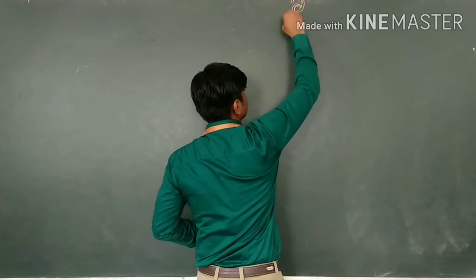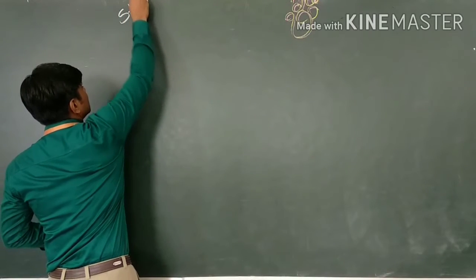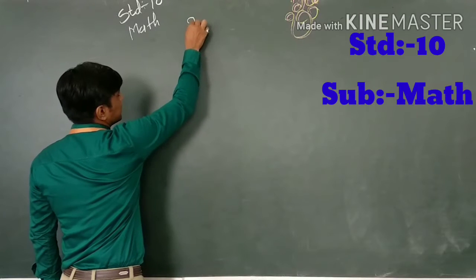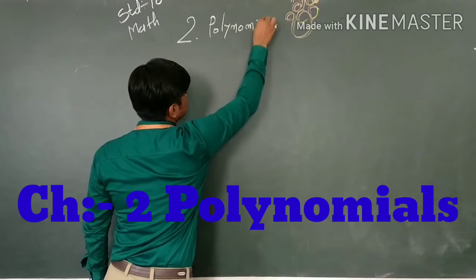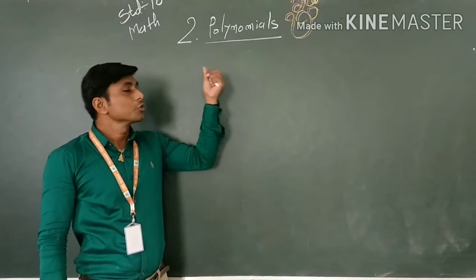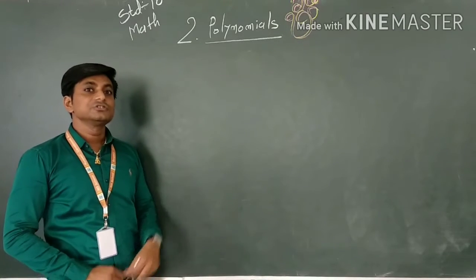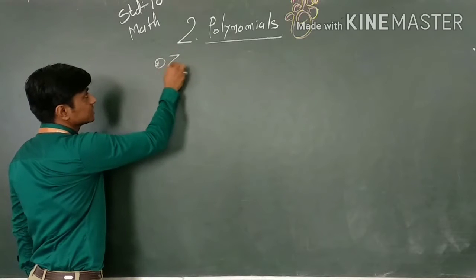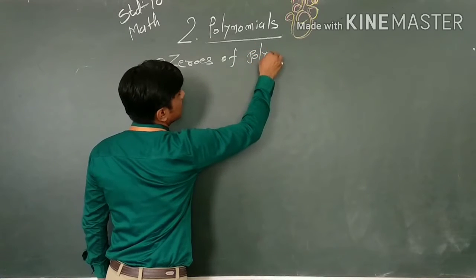Look here everyone. Standard tab, Mathematics. Second chapter, Polynomial. Today, we discuss about cubic polynomial, draw a graph of a cubic polynomial, and find zeros of a cubic polynomial. Our topic is: finding zeros of a given polynomial.